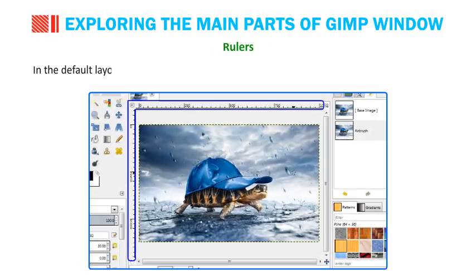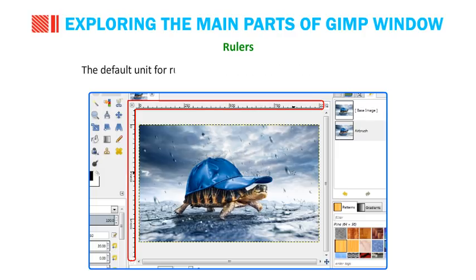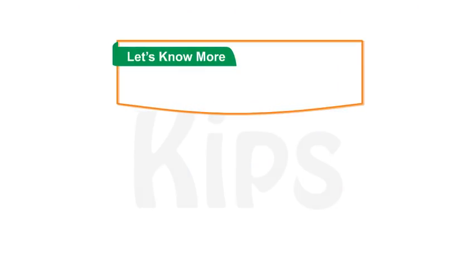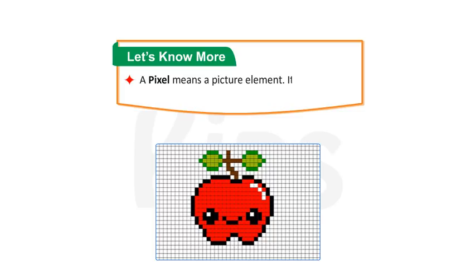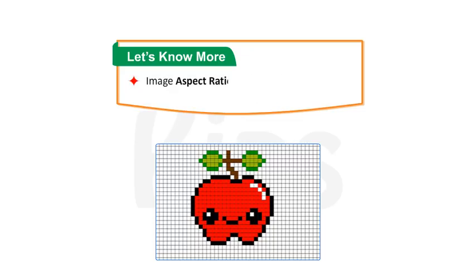In the default layout, rulers are shown on top as well as on the left side of the image window. Rulers are used to determine coordinates within the image. The default unit for rulers is pixels, which can be reset in the status bar. Rulers are visible only when a new file is created. A pixel means a picture element — it is a single dot in a digital image or on the monitor screen. Pixels are the smallest units of information that make up a picture. Aspect ratio is the ratio of the width of an image to its height.